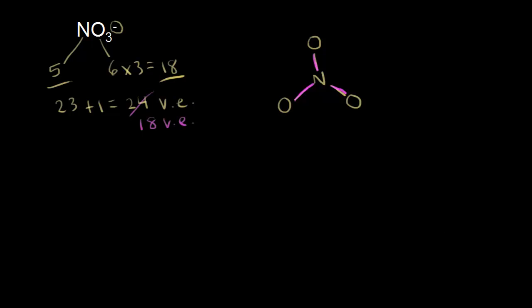We're going to put those leftover valence electrons on our terminal atoms, which are our oxygens. Oxygen is going to follow the octet rule. Currently each oxygen has two valence electrons around it, so each oxygen needs six more valence electrons to complete the octet. I go ahead and put six more valence electrons on each one of my oxygens. Now each oxygen is surrounded by eight electrons, so the oxygens are happy. We added a total of six valence electrons to three oxygens — 6 times 3 is 18 — so we've used up all of the electrons.